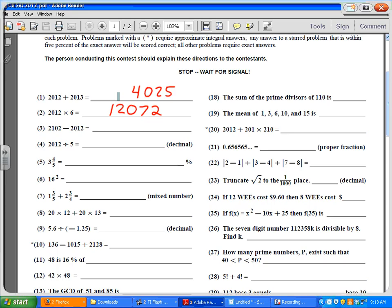Number three is 2102 minus 2012. The 2000s cancel out. So I have 102 minus 12. That's the same as saying 100 minus 10. That's 90.